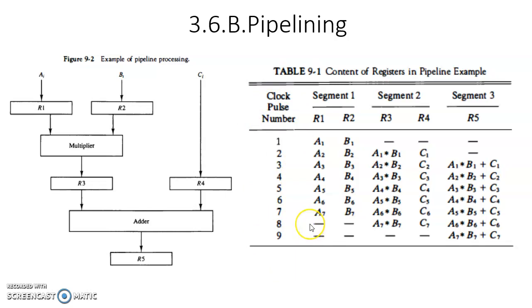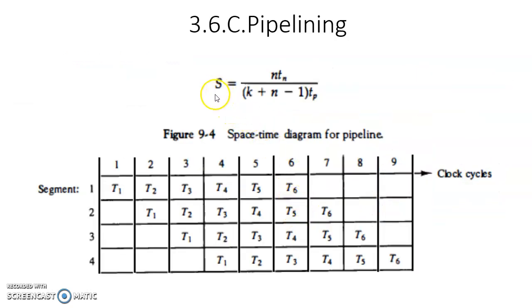Whereas in the non-pipeline method it is taking 7 * 3 = 21 clock pulses. So this is the advantage: speedup. This is called speedup, and speedup can be calculated with the help of this formula.